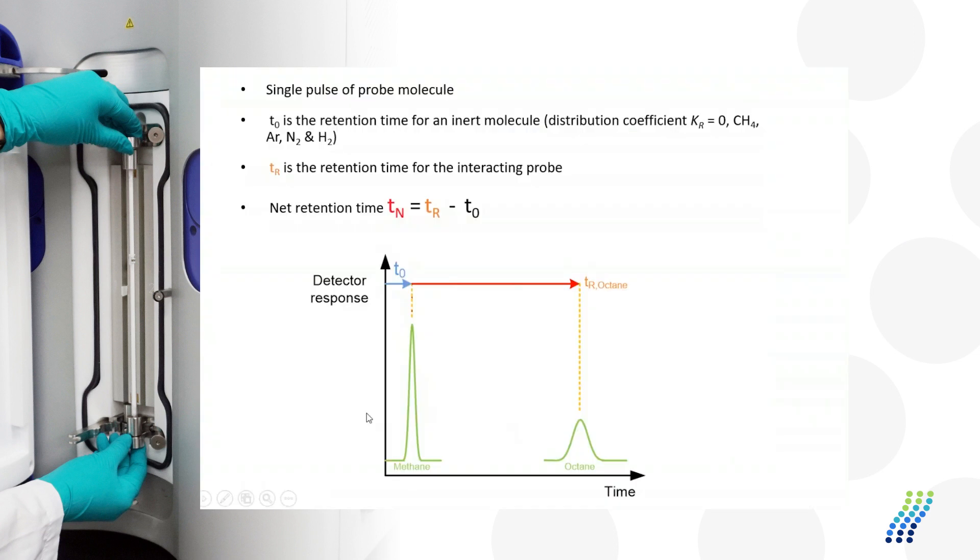Other instruments may use argon or krypton as an inert molecule. So this measures the retention of dead volume for the column of interest or the sample of interest. And then all other probes are referenced from that dead volume. So we're looking at basically the net retention time.